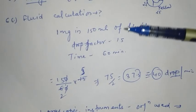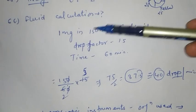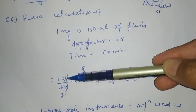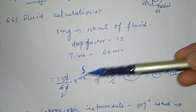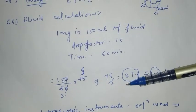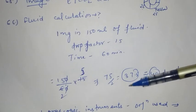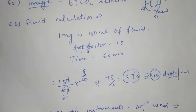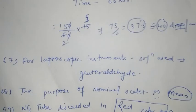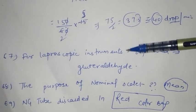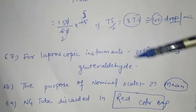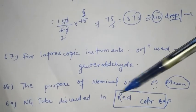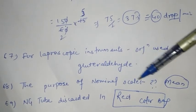Next question related to fluid calculation: you have to give 1 mg of drug in 150 ml of solution. The drop factor is 15 and time is 60 minutes. Calculate the flow rate. The formula is: volume divided by time in minutes, multiplied by drop factor. So 150 divided by 60 into 15 gives approximately 37.5, which rounds to approximately 40 drops per minute.